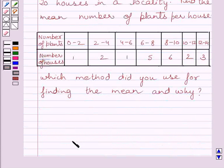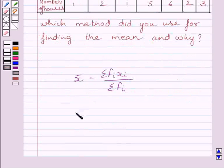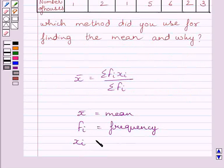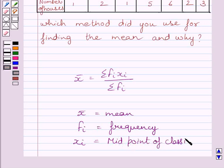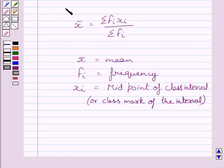First of all, let us understand that mean is equal to summation FI XI upon summation FI. Now in this formula, X bar is the mean, FI is the frequency, and XI is midpoint of the class interval or we can say it is class mark of the given class interval. This is the direct method of finding the mean.